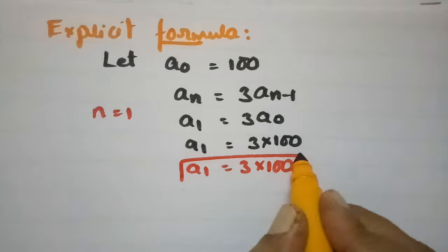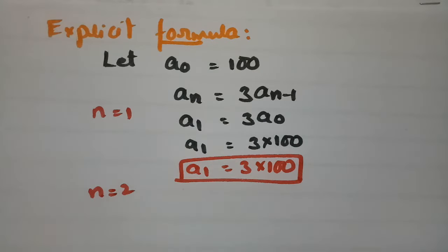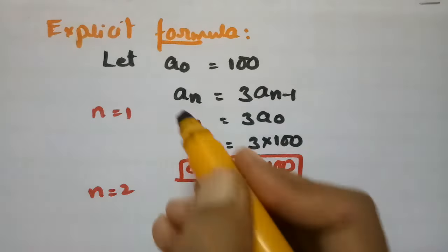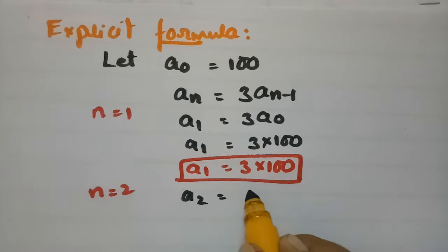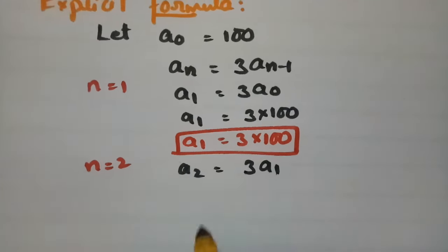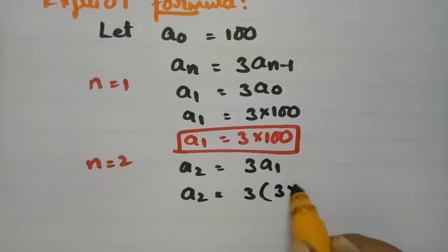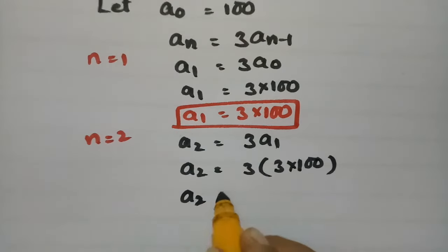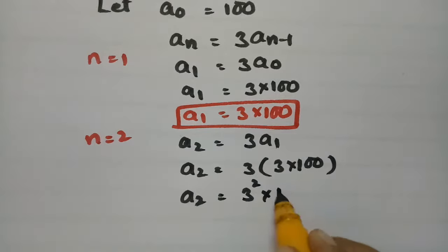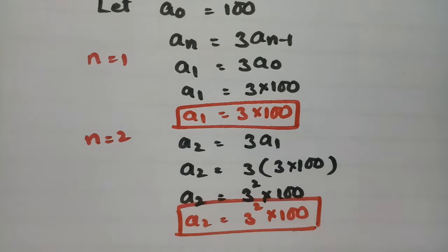If we put n equal to 2 in this recurrence relation, then A2 equals 3 times of A1. What is A1? It is 3 into 100. So A2 equals 3 times of 3 into 100, which can be written as A2 equals 3 squared into 100.